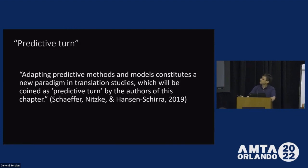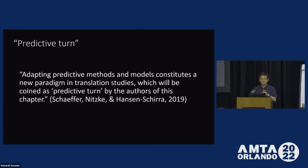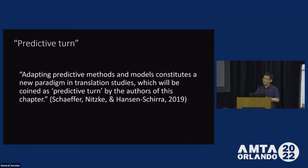So in 2019, the authors of this paper said that adapting predictive methods and models constitutes a new paradigm in translation studies, which they call the predictive turn. This is largely the result of two aspects. The first is the machine learning approach to translation, typically represented by neural machine translation systems. And on the other hand, from the process aspect, we also have rigorous statistical means and computational analyses to model the human translation process, so that these models can be less speculative and translator strategies, translation patterns, and cognitive effort can be measurable and quantifiable. It is largely possible to make falsifiable and specific predictions regarding the product and process of translation.